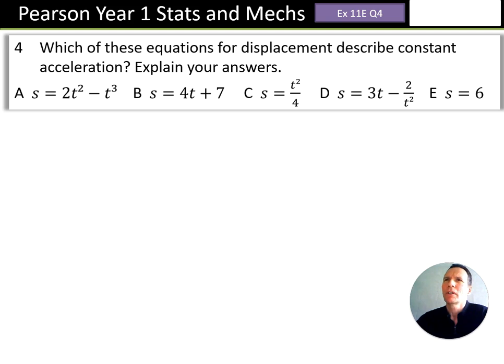Our first equation, we're given S equals 2t squared minus t cubed. So if we differentiate that to get the velocity, we can get velocity equals 4t minus 3t squared.